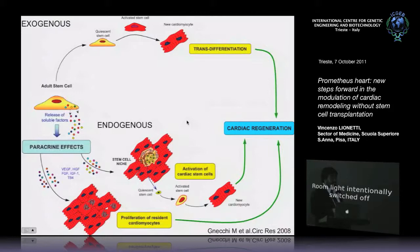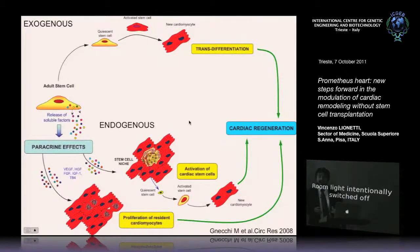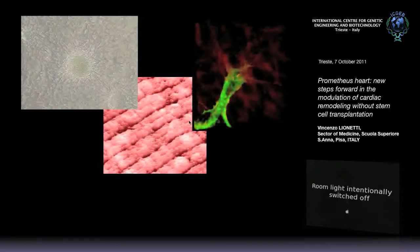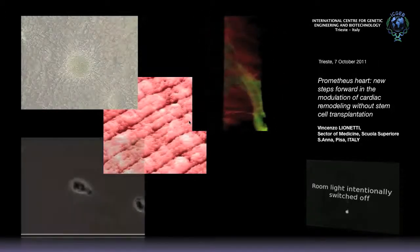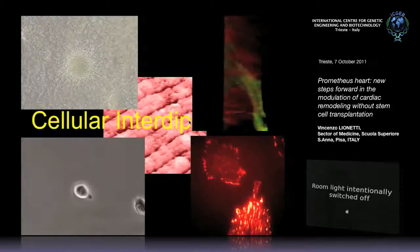Different investigators started to think about which function stem cells have. They can release different paracrine factors, or at the beginning they thought that they could trans-differentiate into a different cell lineage when injected into tissue. So we can summarize our cardiovascular unit: cardiomyocytes, endothelial cells, fibroblasts, and the new entry — stem cells. With this investigation, we can say the cardiovascular unit is composed of these four main kinds of cells.